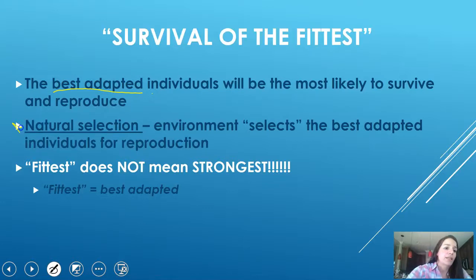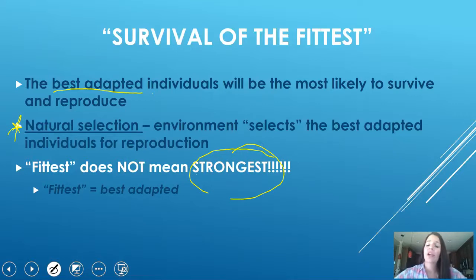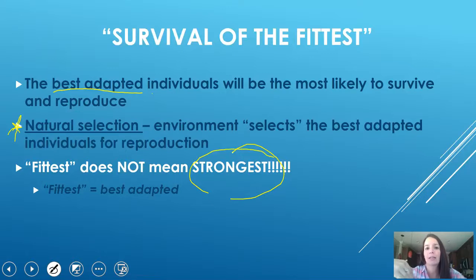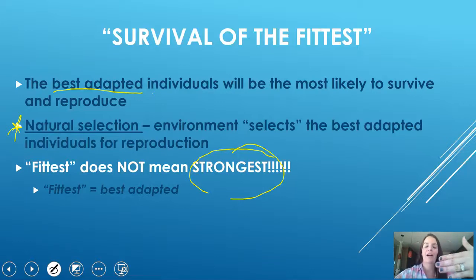Natural selection means that the environment selects the best adapted individuals, but it does not mean the strongest. For example, there are species of fish where large males are slow-moving, but small wimpy males swim fast and actually fertilize the female's eggs before the strong male can get there. So fitness isn't necessarily about strength — it's about passing on more traits.